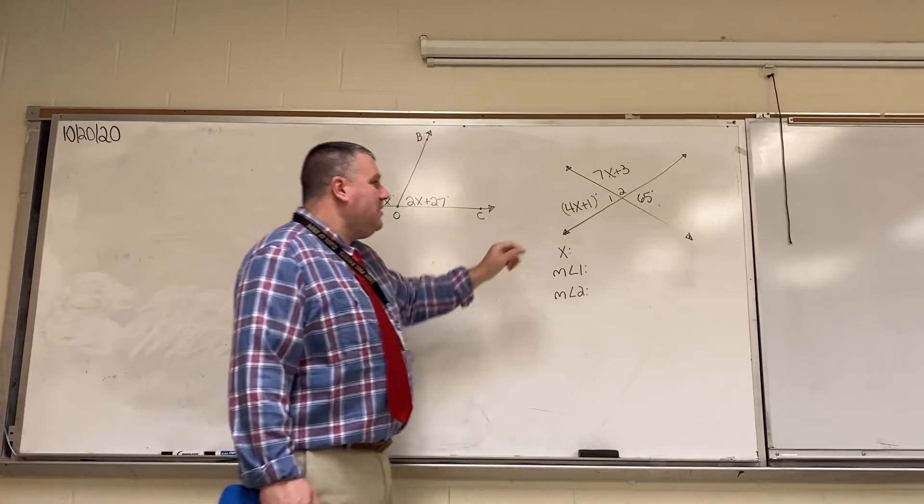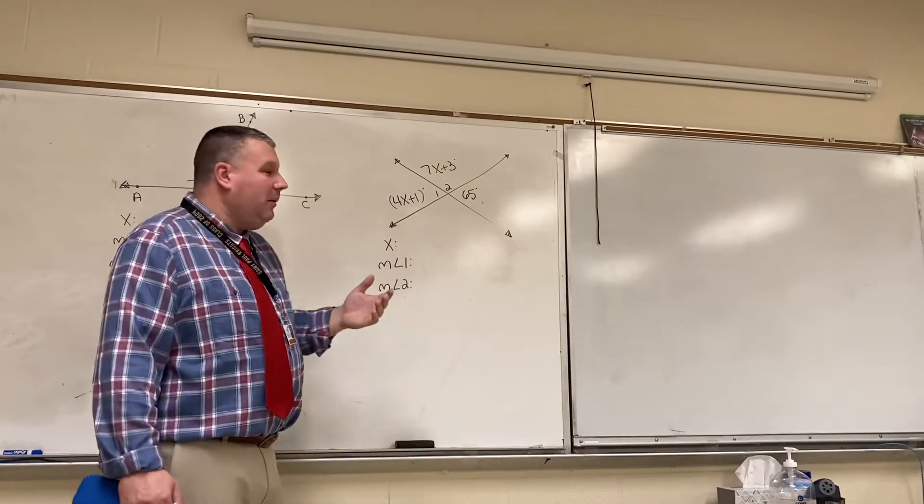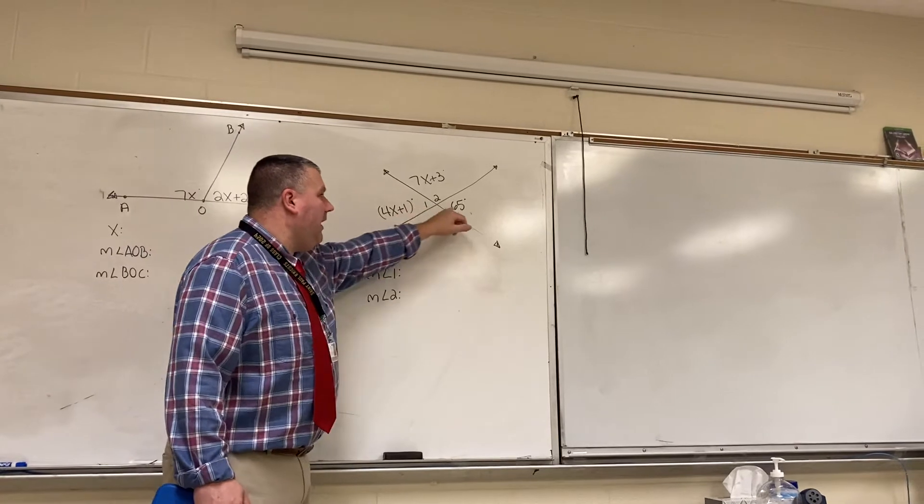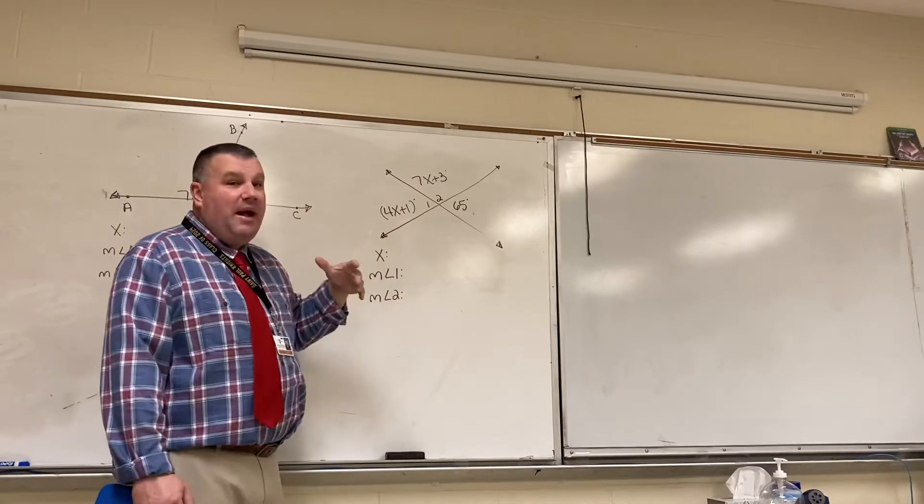If we look over here to the right, we have a couple different things going on here. We have vertical angles, which are opposite of each other. So, 4x plus 1 and 65 would be congruent.